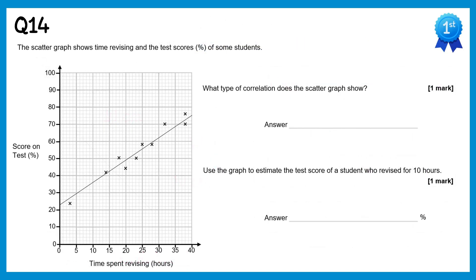For the scatter graph question, since the points are going upwards this is a positive correlation. To estimate the test score for someone who revised for 10 hours, we go up from 10 hours to the line of best fit and then read off the score, which is 36%.